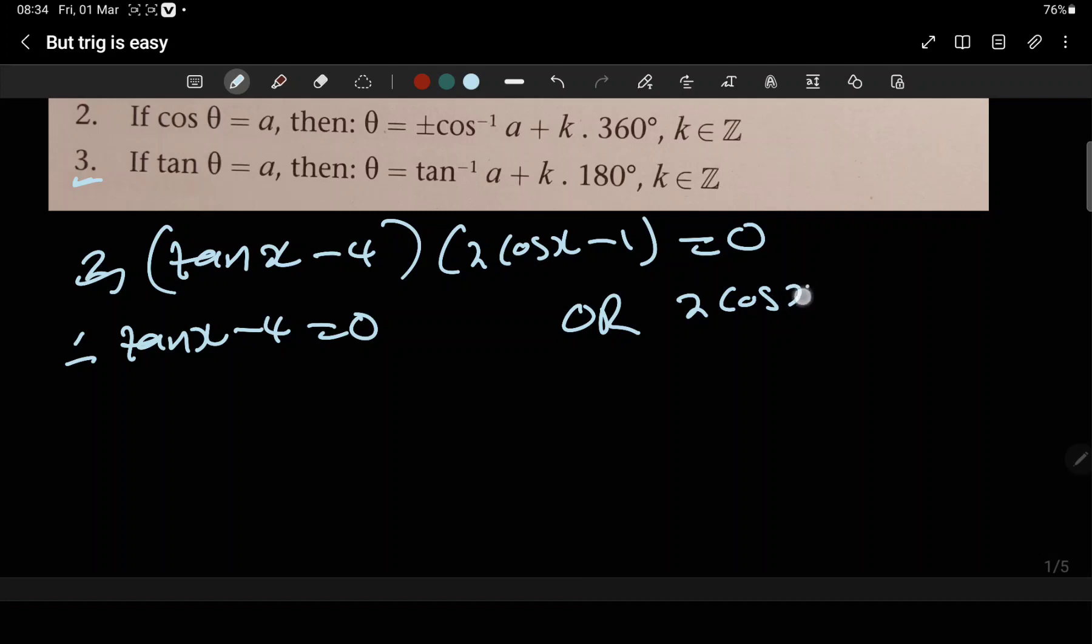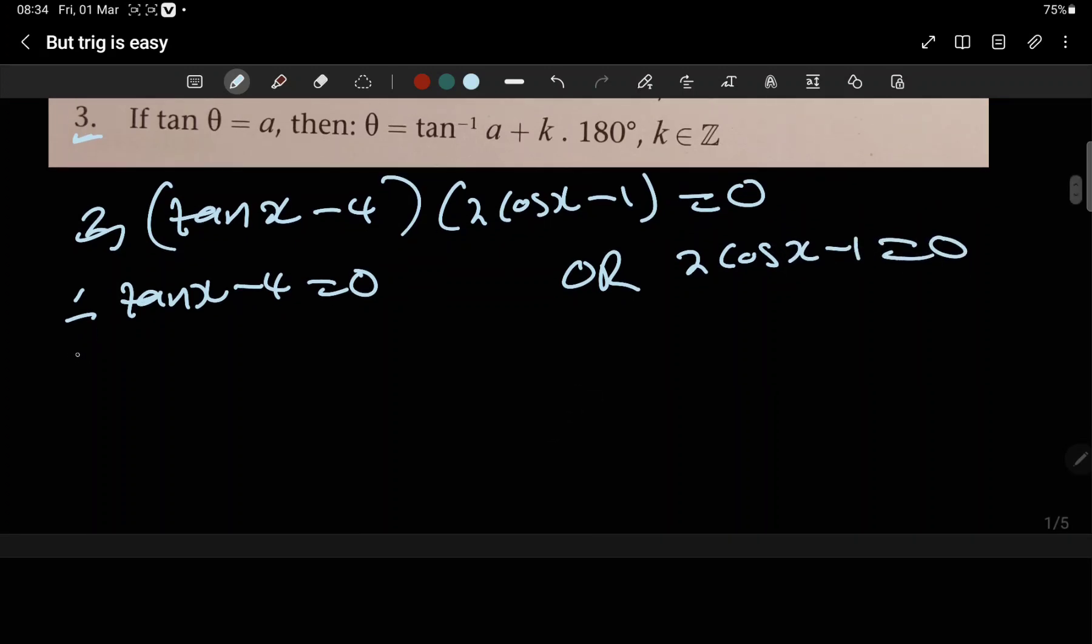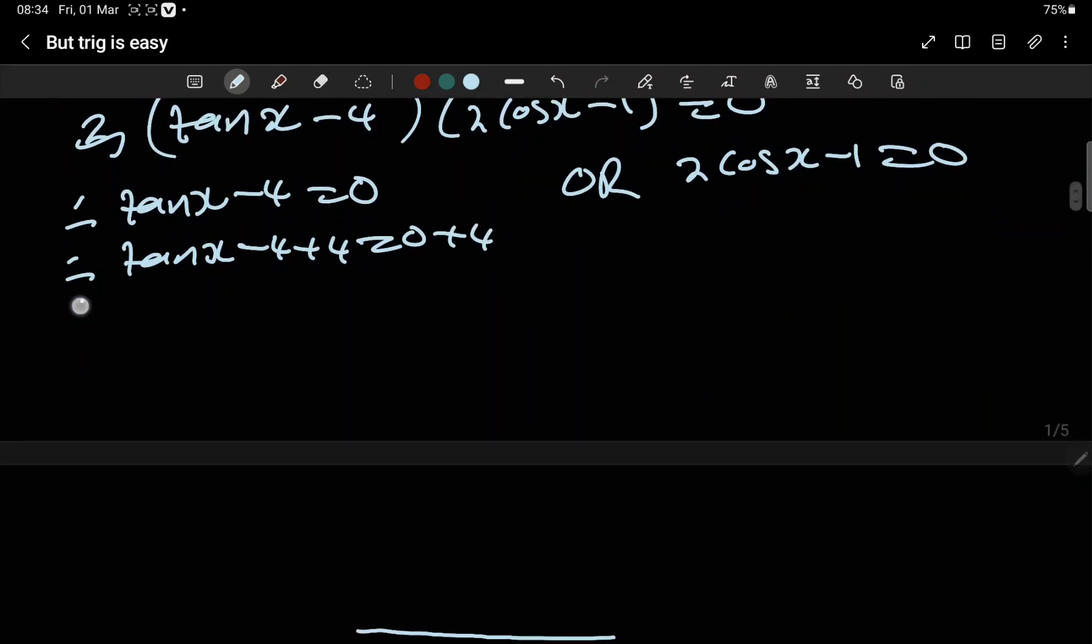Therefore, this side: tan(x) minus four plus four equals zero plus four. Therefore, tan(x) minus four plus four equals zero plus four. So we have tan(x) equals four.